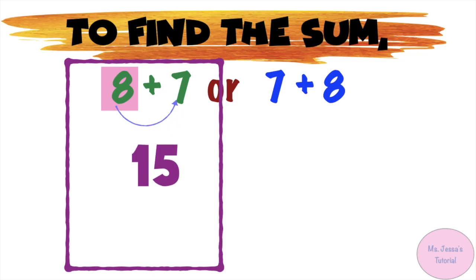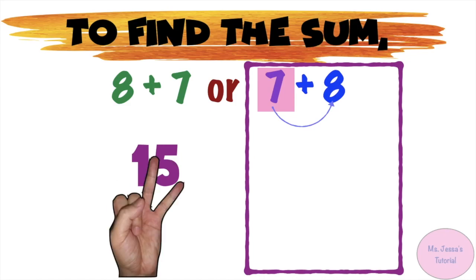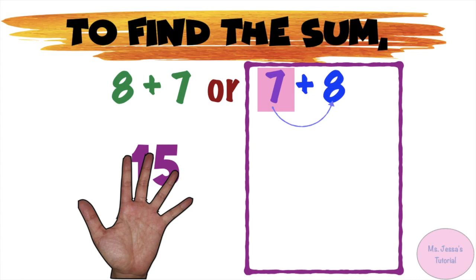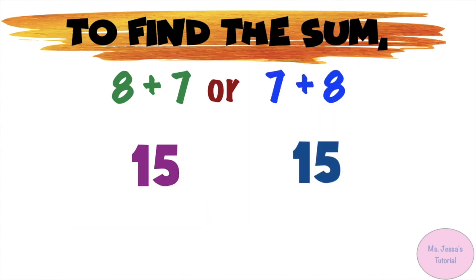Now let's proceed to the second equation: 7 plus 8. Put 7 on your mind, then count forward until you reach the 8th number. 7, 8, 9, 10, 11, 12, 13, 14, 15. We have 15 here. As you can see, their sums are the same. So that means 8 plus 7 is equal to 7 plus 8.